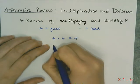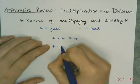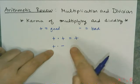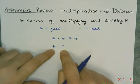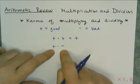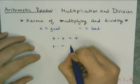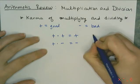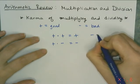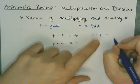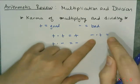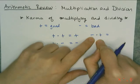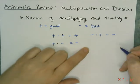If I have a positive times a negative, it's like a good thing happening to a bad person — like Hitler winning the lottery — and we don't want that. That's bad, so that's going to be negative. If I have a negative times a positive, that is a bad thing happening to a good person — that's Gandhi getting hit by a truck — which is bad, so that's negative.